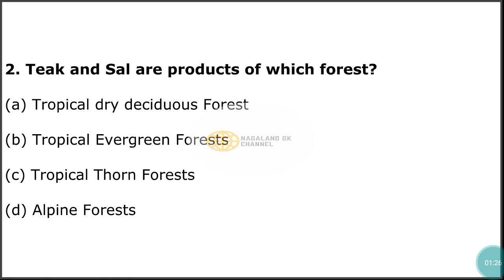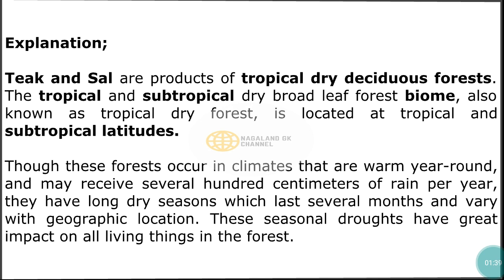Question number 2: Dheg and sal are products of which forest? The correct answer is option A — tropical dry deciduous forest. Dheg and sal are products of tropical dry deciduous forest. The tropical and subtropical dry broadleaf forest biome, also known as tropical dry forest, is located at tropical and subtropical latitudes. Though this forest occurs in climates that are warm year-round and may receive several hundred centimeters of rain per year, they have long dry seasons which last several months. These seasonal droughts have great impact on all living things in the forest.